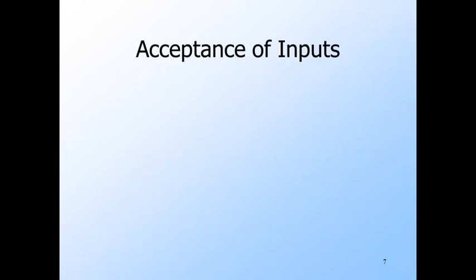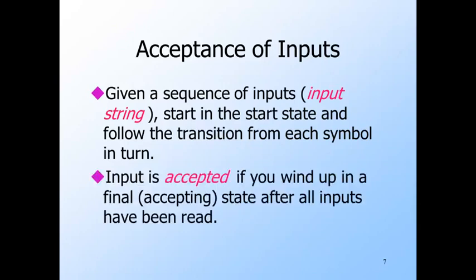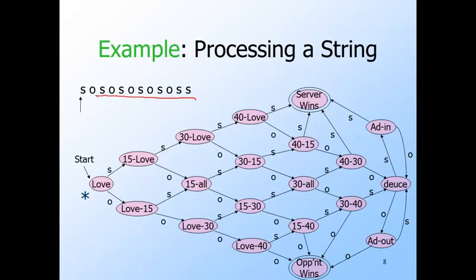The job of an automaton is to process strings of input symbols. We always begin at the start state and read each input symbol in order. For each input symbol, we follow the transition from the state we are in to discover the new state. We accept the string if we wind up in a final state after processing the entire input. Here is an example input string representing a game in which the server and opponent alternate winning points until the very end. We'll mark the current state by a star, and initially the current state is the start state.